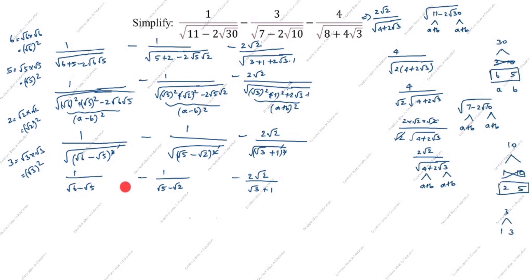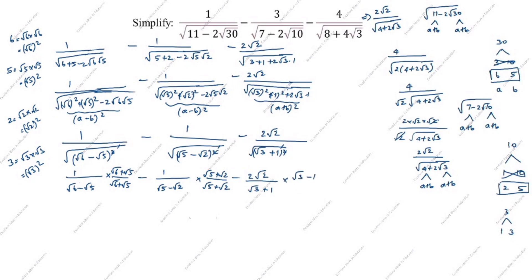Next step, we rationalize the denominators. For the first term: multiply by (root 6 plus root 5) divided by (root 6 plus root 5). For the second term: multiply by (root 5 plus root 2) divided by (root 5 plus root 2). The denominator was minus, so we rationalize by plus.